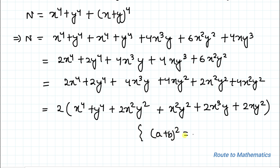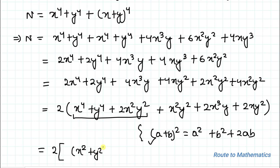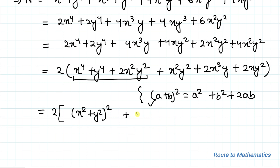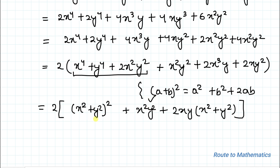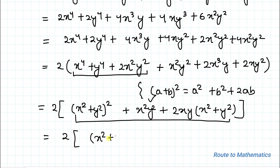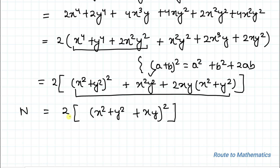Applying the identity (a + b)² = a² + b² + 2ab with a = x² and b = y², we can write x^4 + y^4 + 2x²y² = (x² + y²)². Then taking 2xy common from the remaining terms gives 2xy(x² + y²). Applying the same identity again with a = (x² + y²) and b = xy, the full expression becomes N = 2 × (x² + y² + xy)².